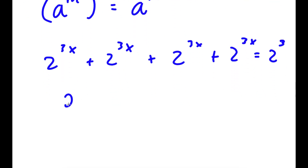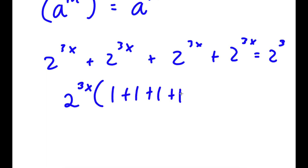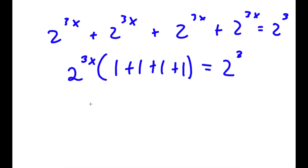Now, if I factor out 2 to the power of 3x, I get 2 to the power of 3x times 1 plus 1 plus 1 plus 1 is equal to 2 to the power of 3, which is the same thing as 2 to the power of 3x times 4 is equal to 2 to the power of 3.